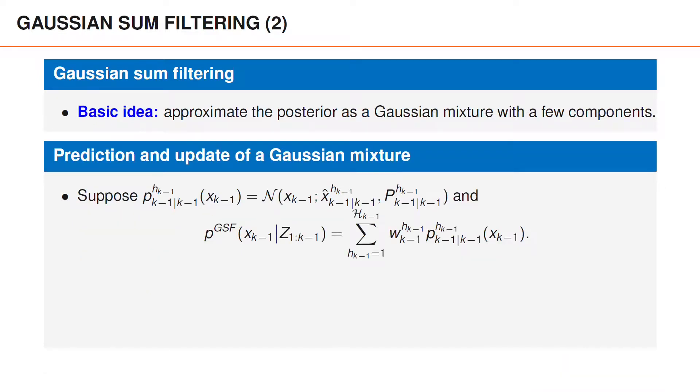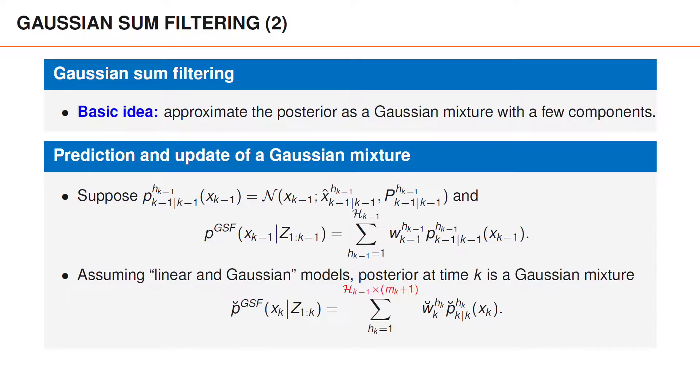To give you an idea about what the recursions might look like, we assume that we end every recursion with a Gaussian mixture with a number of different components. Every component has a weight w and a Gaussian density p_k given k with superindex h. We assume that the hypotheses, or components, are numbered from 1 to calligraphic capital H, and at time k minus 1, the capital H has a subindex k minus 1. We can then perform prediction and update on this Gaussian mixture, and for every hypothesis at time k minus 1, we obtain m_k plus 1 new hypotheses, giving us H_{k-1} times m_k plus 1 components in the posterior at time k.